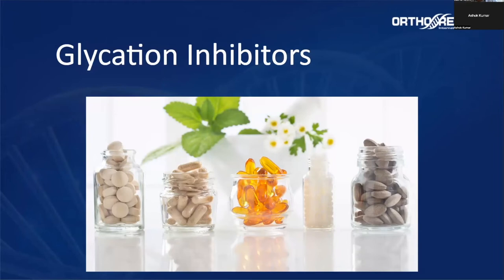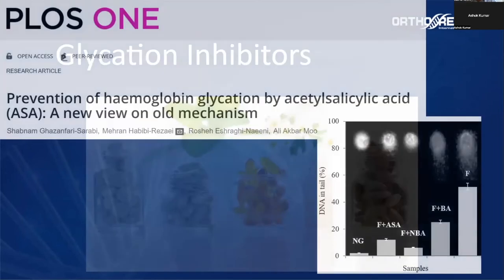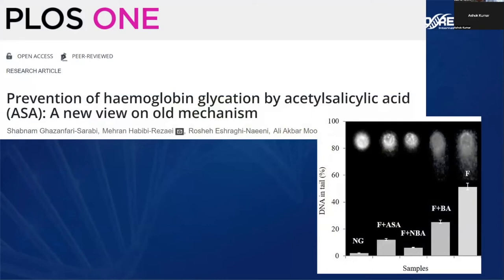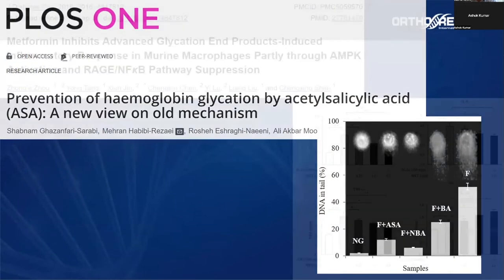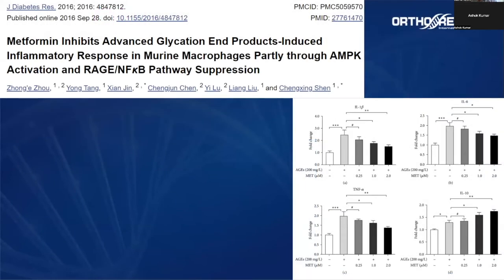We can use many glycation inhibitors as supplements and medications. Acetylsalicylic acid is really important to avoid the glycation of hemoglobin — we can use it not just to prevent stroke or heart attack, but also to prevent hemoglobin glycation. Another substance we use a lot is metformin, one of the drugs used to treat diabetes, which decreases the production of advanced glycation end products and helps patients who need our regenerative treatment.